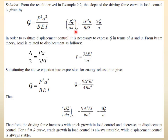When we say load control, it means that P should appear in the expression. When we say displacement control, delta should appear in the expression. We did the differentiation and only a² was a function of a, so that became 2a. Comparing this result with the original expression for G, you can see that dG/da under load control equals 2G/a.